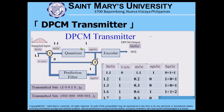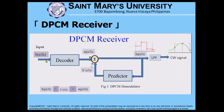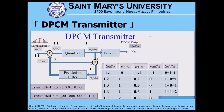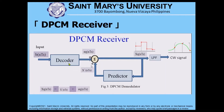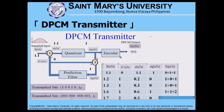Having learned the working principle of DPCM, we are now ready to recover the data. For example, let's recover the last part — 001. The DPCM receiver consists only of the predictor; it doesn't have a quantizer compared to the DPCM transmitter. Of course, it has a decoder, whereas the transmitter has an encoder.